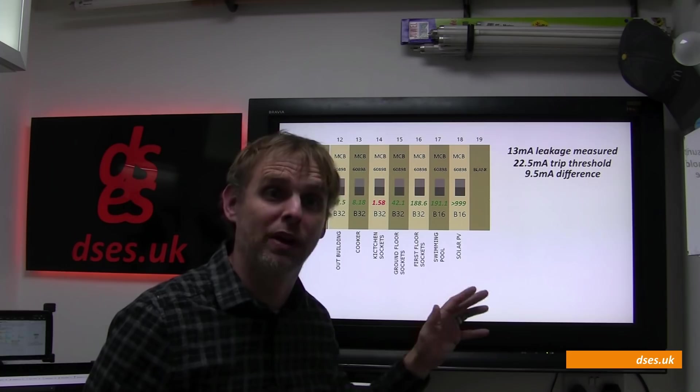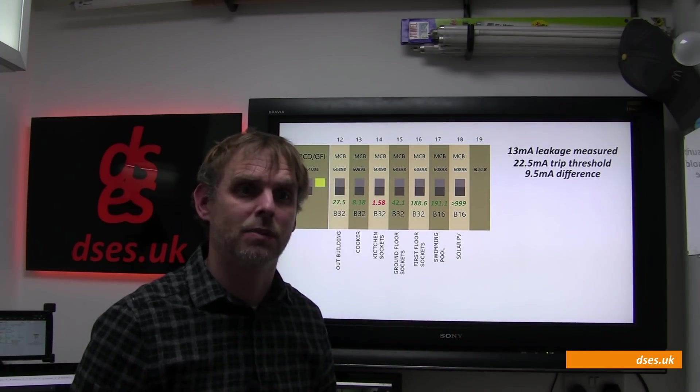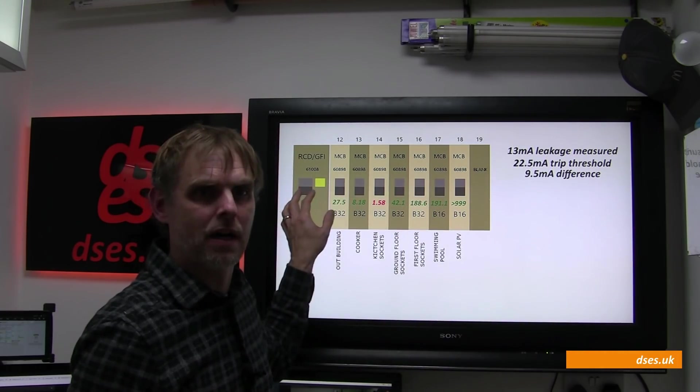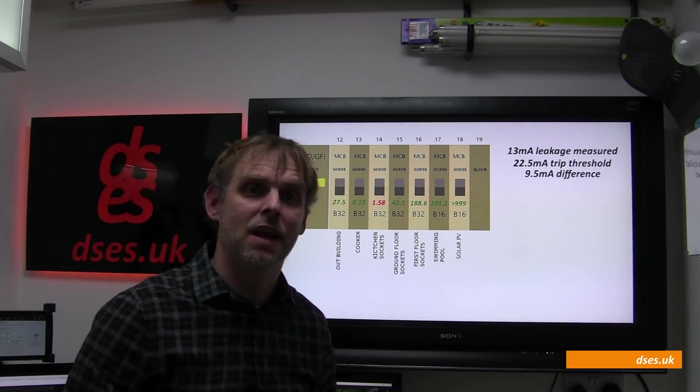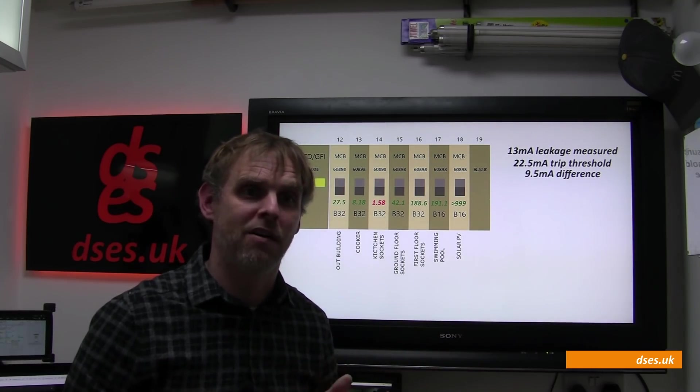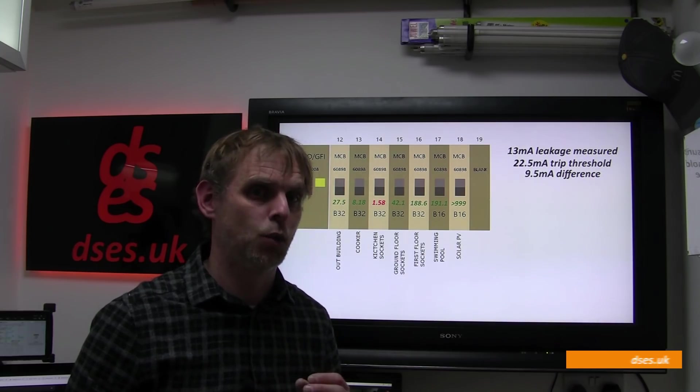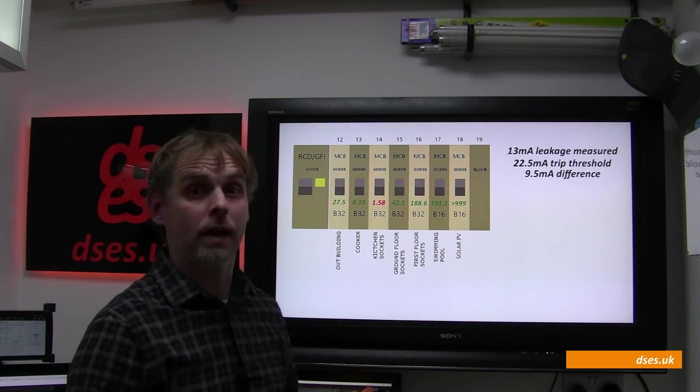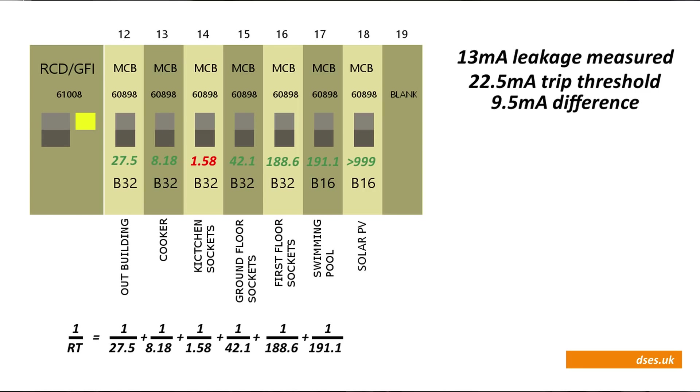Before we go around and plugging any other things, let's see what these existing numbers give us when we do the maths. What we have here are a bunch of resistances connected in parallel with regard to the RCD. You may recall from your school physics lessons that the resultant resistance when connected in parallel will always be lower than the single lowest individual resistance, in this case the 1.58 megaohm measured on circuit 14. Here's our calculation. Notice I've discounted circuit 18 entirely, as the result of that is effectively zero. Circuit 16 and 17 are also pretty close to zero as it turns out, but we'll leave them in place here. Adding this lot up gives us a figure of 0.823.